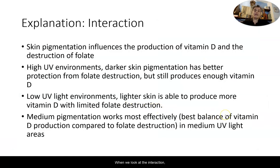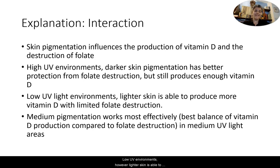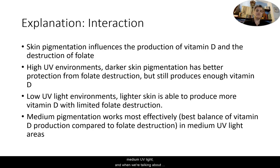When we look at the interaction, skin pigmentation influences the production of vitamin D and the destruction of folate. In high UV environments, darker skin pigmentation provides better protection from folate destruction while still producing enough vitamin D. In low UV environments, lighter skin is able to produce more vitamin D with limited folate destruction. Medium skin pigmentation works most effectively in medium UV light, achieving the best balance of vitamin D production and minimizing folate destruction.